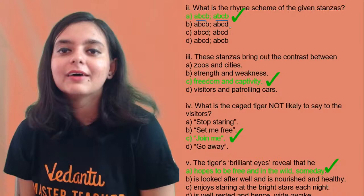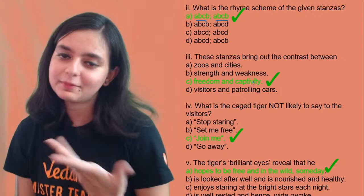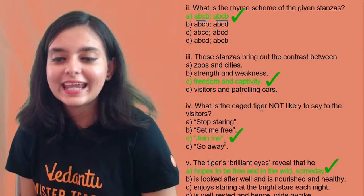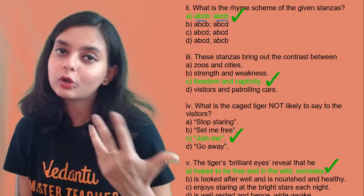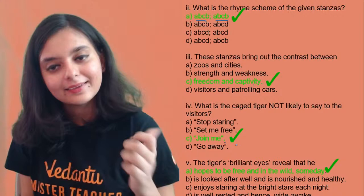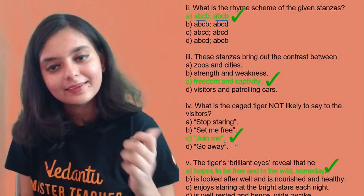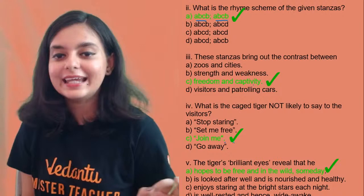Freedom and captivity — that is simple. The caged tiger is not likely to say 'join me' to the visitor. He could say 'stop staring,' 'set me free,' or 'go away' — those ideas are going on in his mind. But he cannot anyhow say 'join me.'